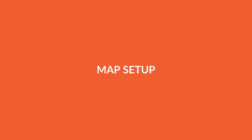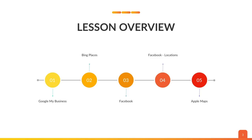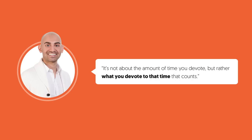So now let's go over setting up your map. There are quite a few different things that you need to know — from Google My Business, to Bing Places, to Facebook, Facebook Locations, and Apple Maps. We'll be going over all of them. And if you do these and do it right, you'll start seeing more and more results over time.